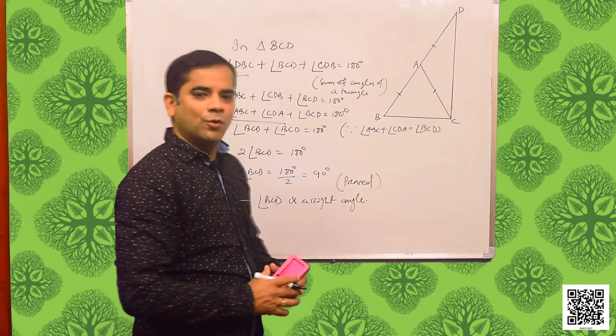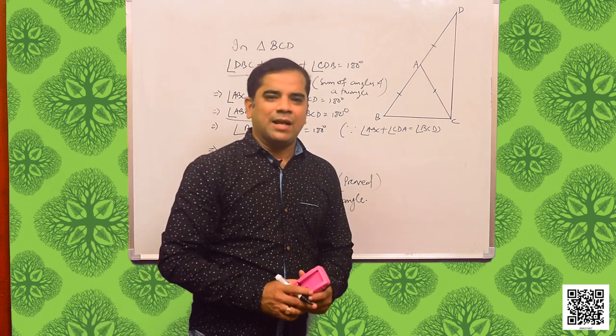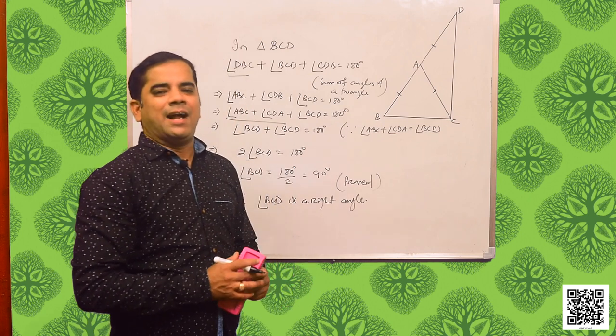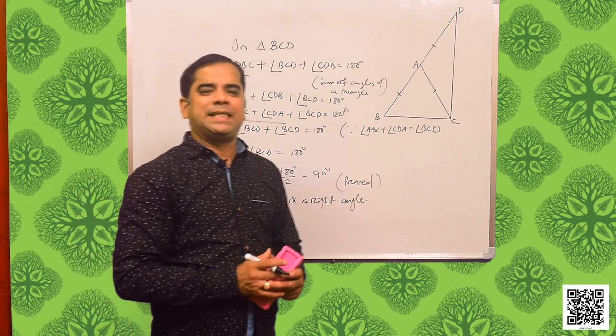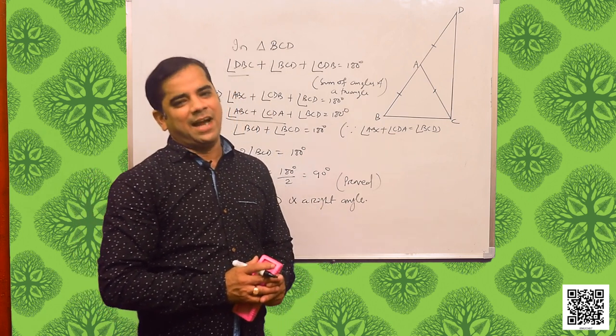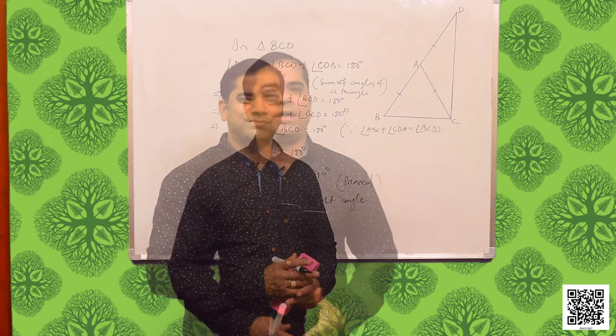We have proved that angle BCD is equal to 90 degrees, that means angle BCD is a right angle. In this way we have proved that angle BCD is a right angle. Hope you have understood.